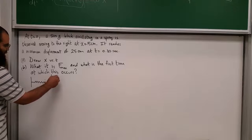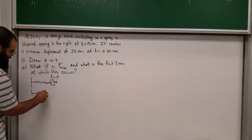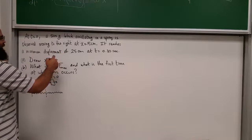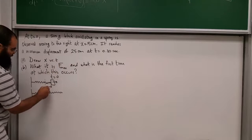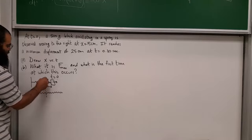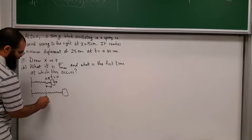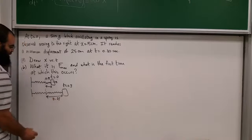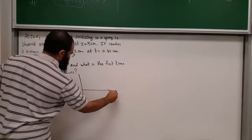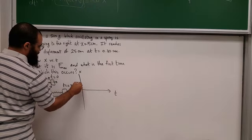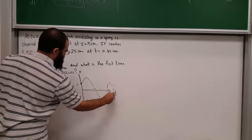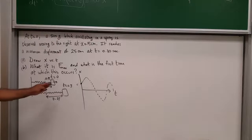The force is maximum whenever displacement from equilibrium is maximum — when x equals the amplitude. Let's draw the spring setup first. At t = 0, the mass is at 15 cm and moving to the right. At t = 0.3 seconds, the mass reaches x = 25 cm. The motion is sinusoidal but with a phase offset — not a pure cosine or sine.